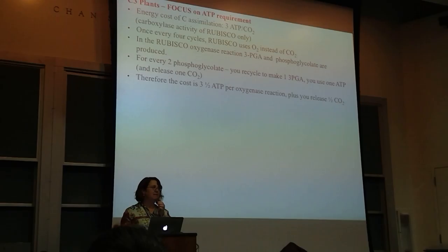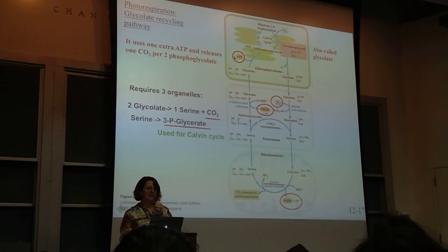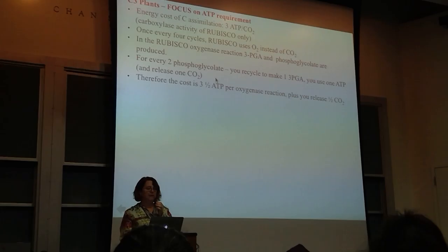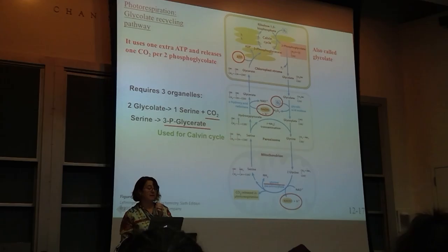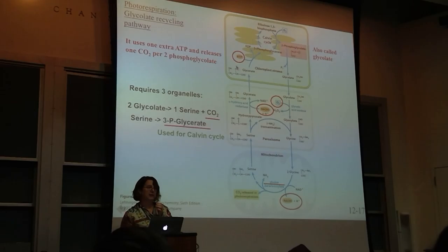If given these types of pathways, you should be able to do these calculations, but you also want to know the take-home messages. You don't have to memorize the entire pathway, but you have to know the energetics. For every 2 phosphoglycolates, you recycle to make 1 3-PGA which can go back into the Calvin cycle. You use 1 ATP and release 1 CO2. To convert glycolate into 3-PGA for the Calvin cycle, you release 1 CO2 and put in 1 extra ATP.